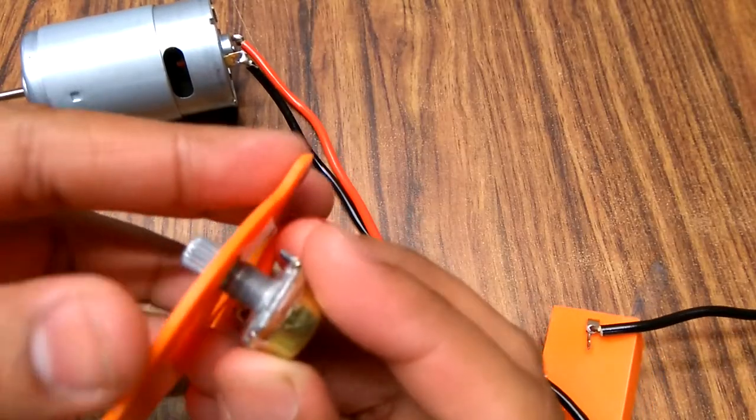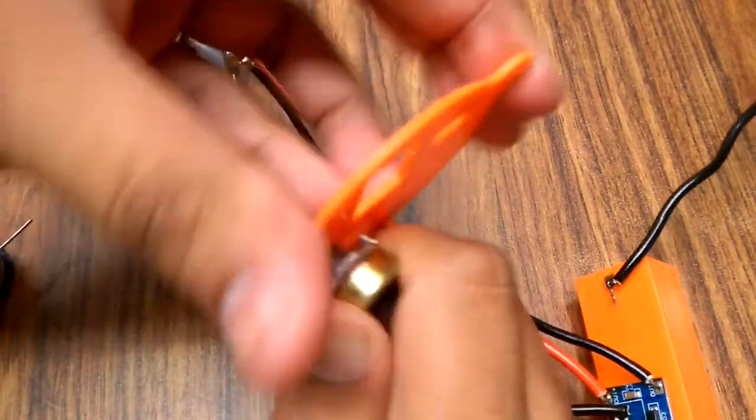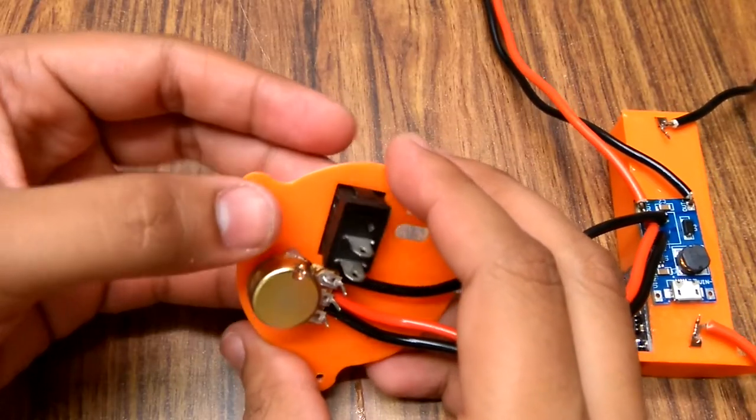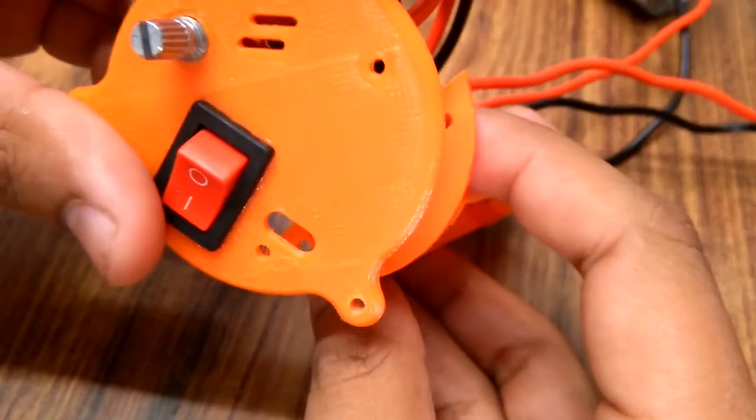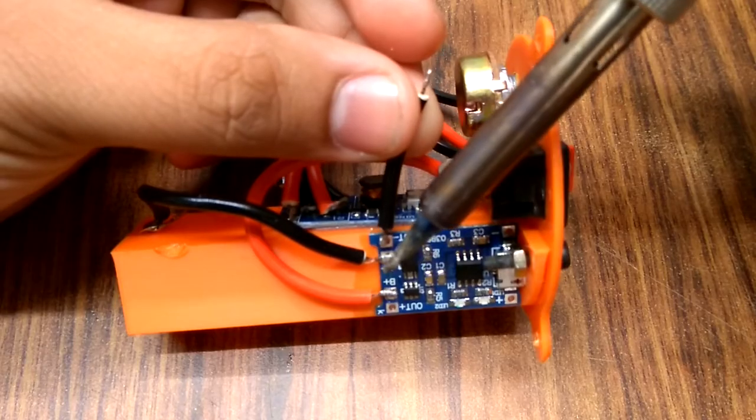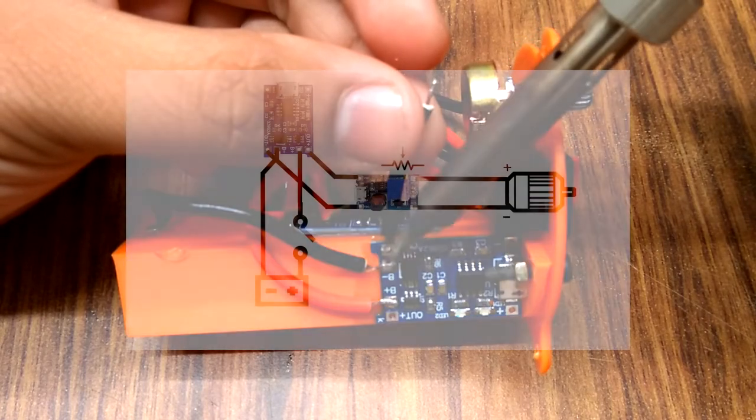I fixed the potentiometer and switch on the back plate of the tool which had proper holes with M3x6mm nut bolts and made rest of the connections according to this diagram.